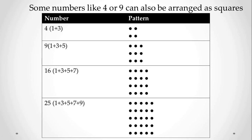Some numbers like four or nine can also be arranged as a square. If the number is four, it creates a 2×2 square pattern. For nine: first row three dots, second row three dots, third row three dots. For 25: five rows and five columns. The same number of rows and columns are used. In exam terms, those numbers that are perfect squares will create the square pattern — four is the square of two, nine is the square of three.